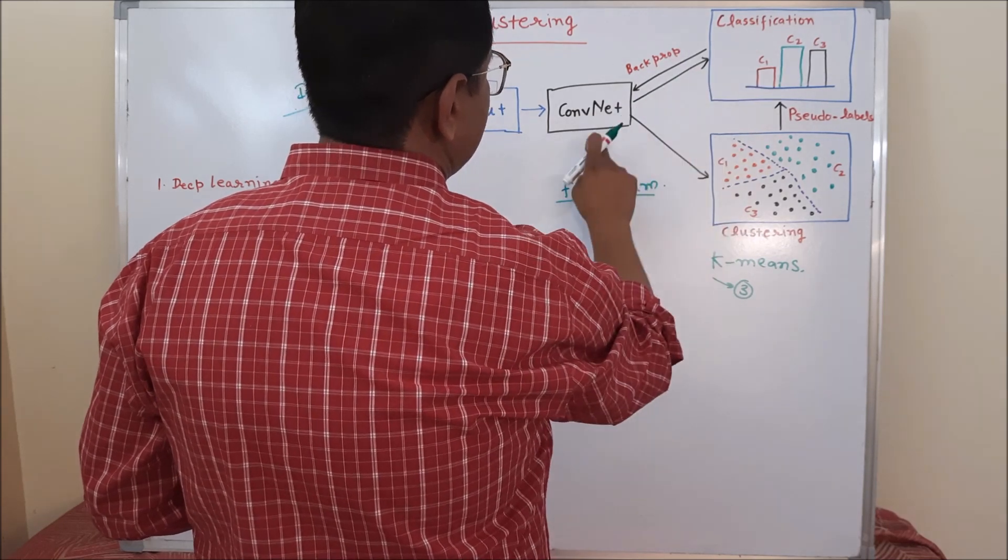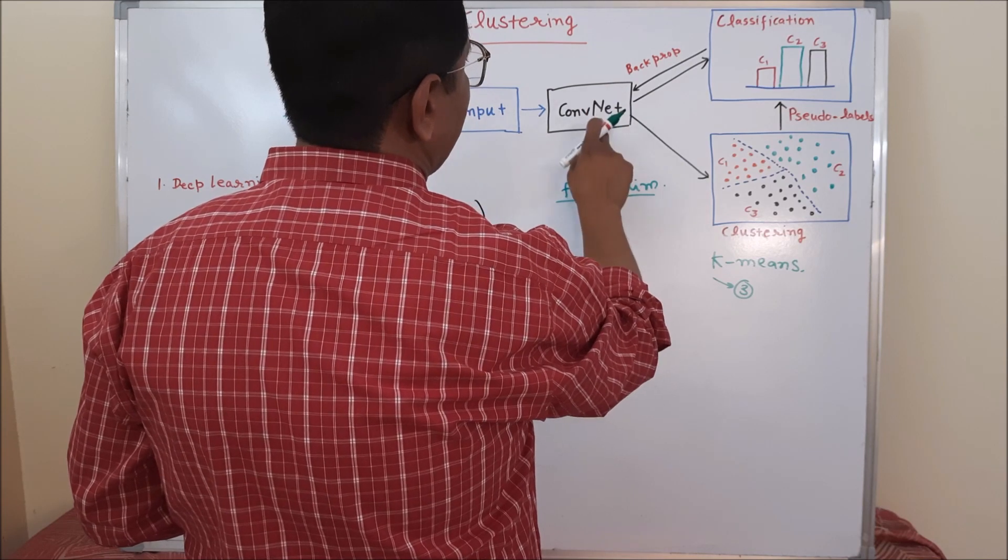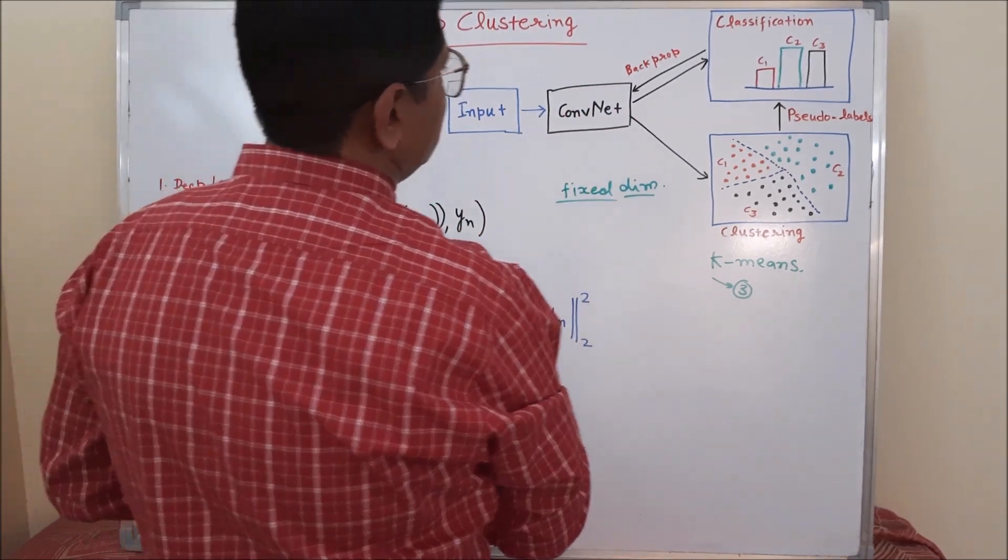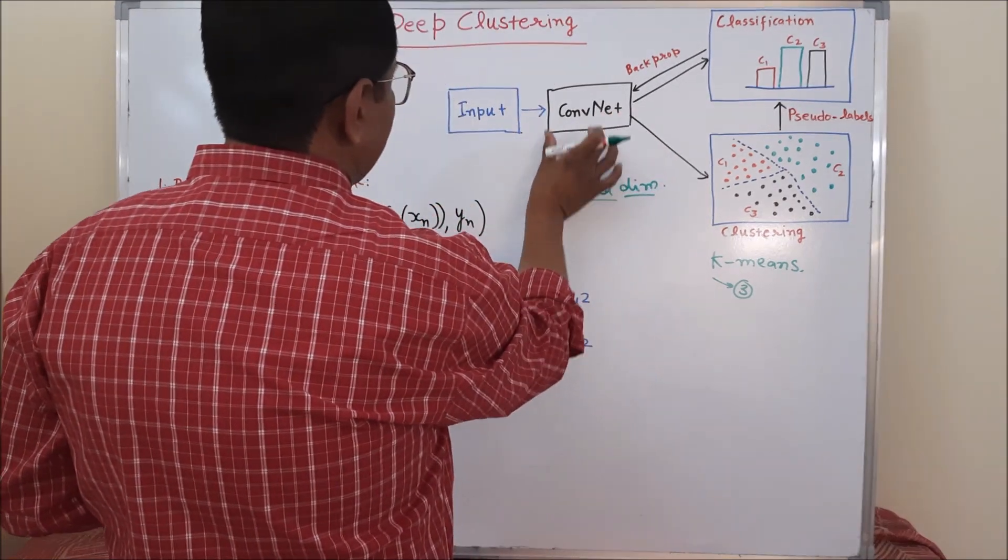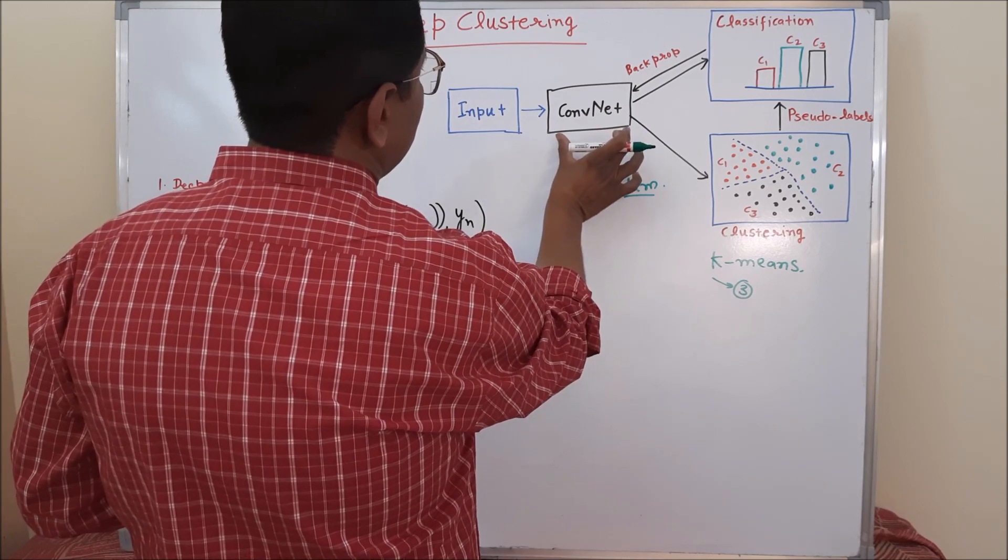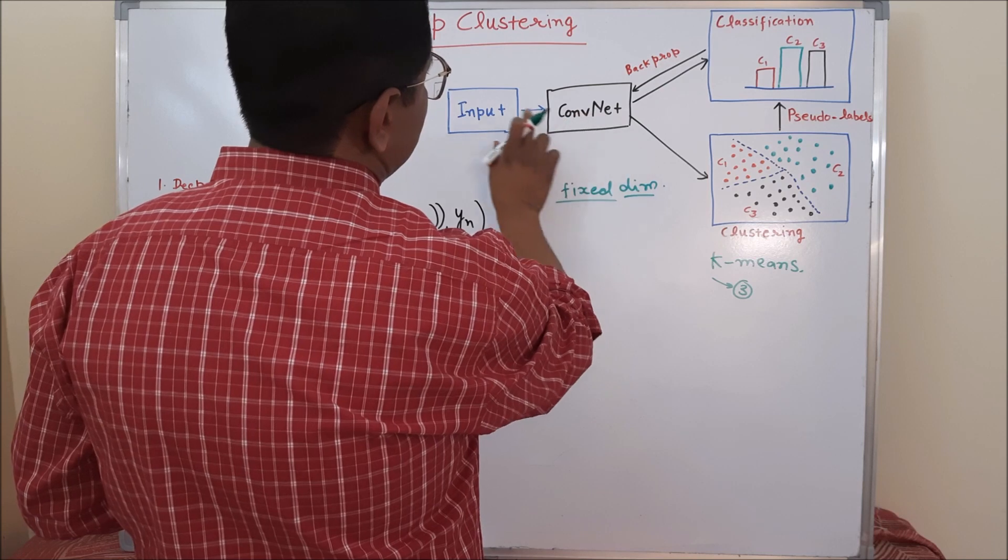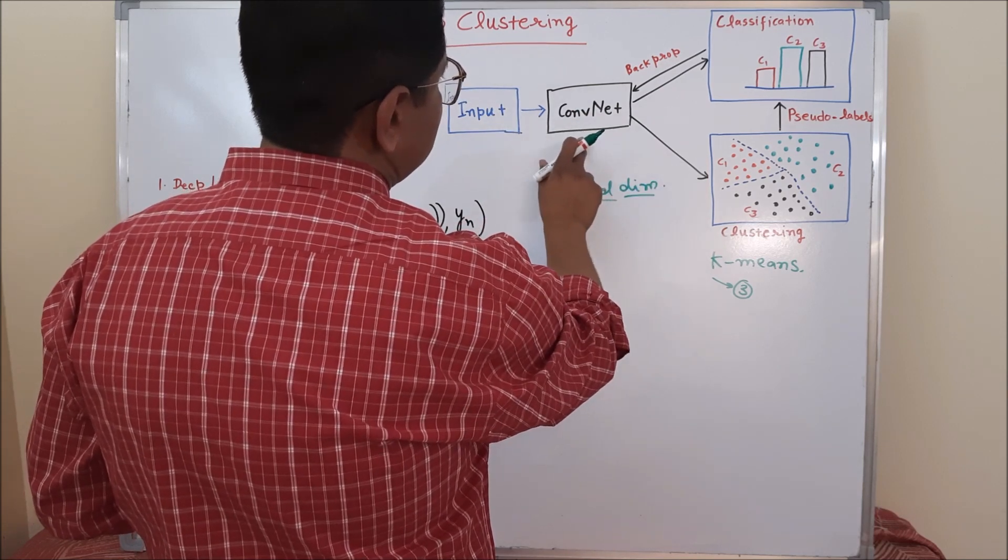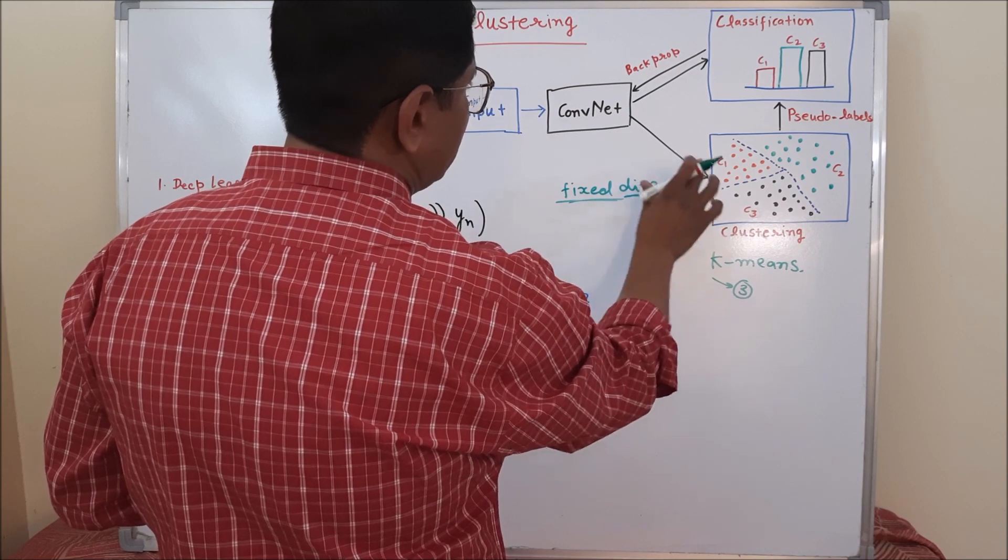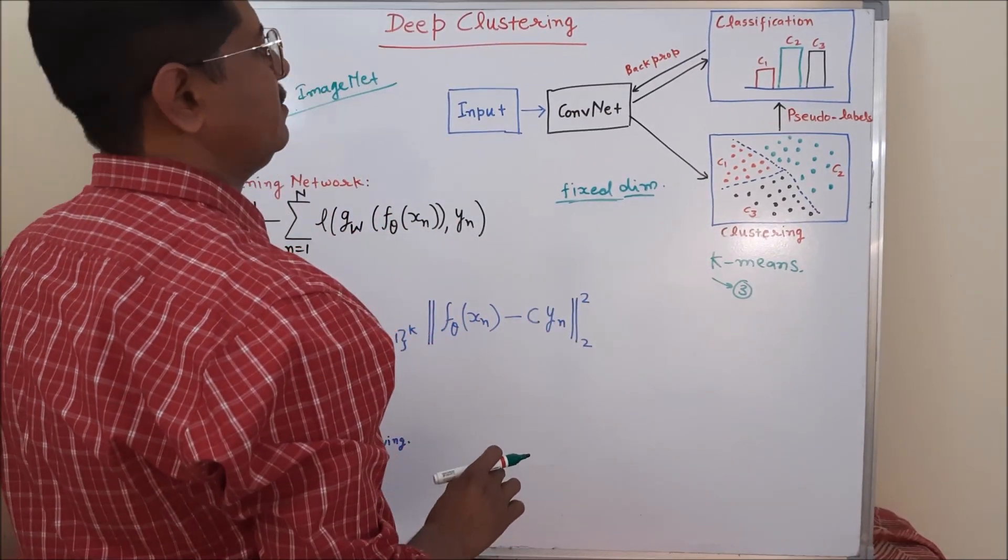With this backpropagation, the network parameter theta and neuron weights get updated. After that, as a next cycle, we again pass the input through the weight-updated component architecture. In this case, the system will generate more better fixed dimensionality feature vector output for each of the images.